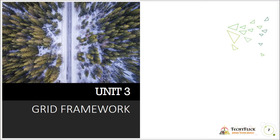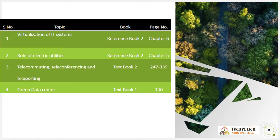Unit three is Grid Framework, with four topics. Virtualization of IT Systems is from reference book two, chapter six. Role of Electric Utilities is from reference book two, chapter five. Telecommuting, Teleconferencing and Tele Reporting is from textbook two, pages 247 to 339. The last topic from unit three, Green Data Center, is from textbook one, page 130.